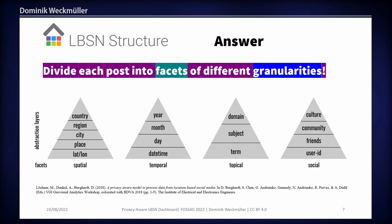The answer is actually pretty simple. This data scheme splits up each social media post into four different facets — the spatial facet, the temporal one, topical one, and the social one. Each facet has different granularities. For the spatial one, you have country at the top, then region, city, a place, and lat/long. So FOSS4G would be a 'place,' and if you add a specific location in this building, it might even have a lat/long attached. The same structure applies to the temporal, topical, and social facets — splitting each post into the most atomic components.